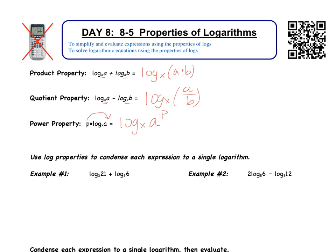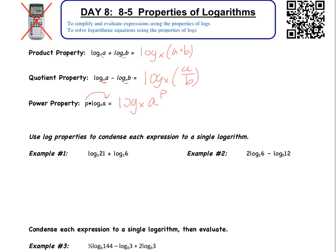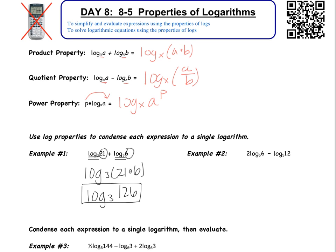Now we're going to jump into some examples. For examples 1 and 2, we are condensing the expressions into a single log. In example 1, we have log base 3 of 21 plus log base 3 of 6. The first thing to check is that we have the same log base — and in this case we do. Adding the logs means we can multiply the arguments, so this is 21 times 6. Our final answer is log base 3 of 126.